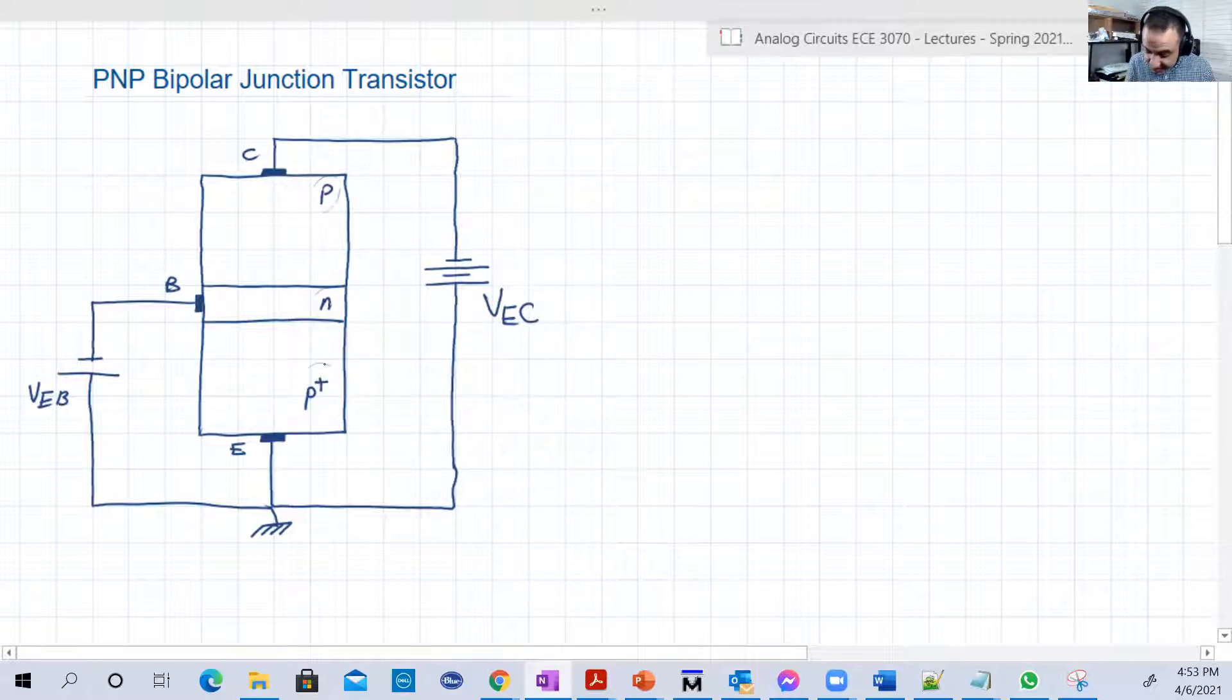But again, the emitter is still highly doped compared to the other ones, and still the base is a thin layer between both.